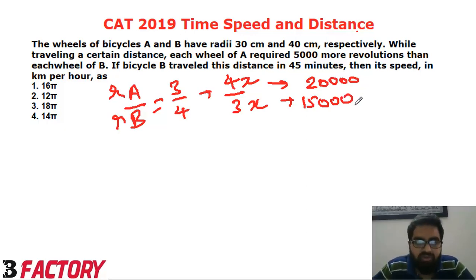Now, we can find the speed using A's distance as well, because the distance travelled by both of them will be equal. I will take A. If I take distance travelled by A, number of revolutions is 20,000, and then 2 times pi times R. This is the distance travelled by A.